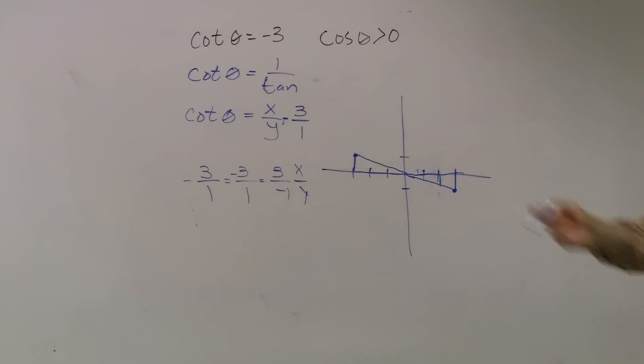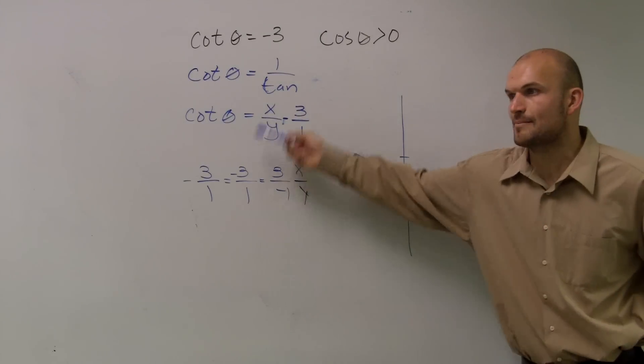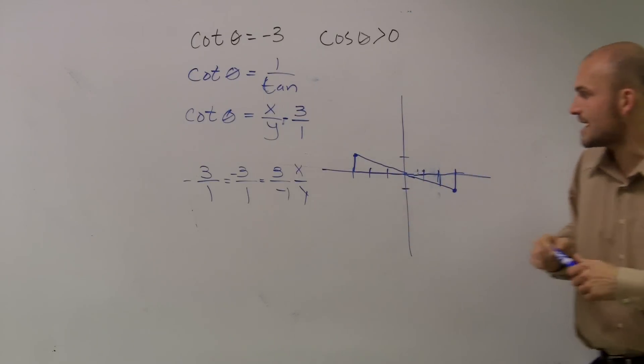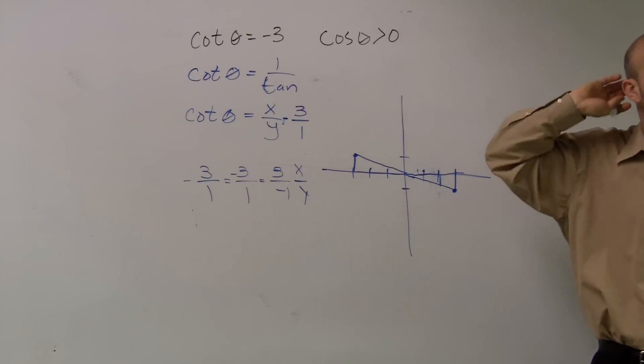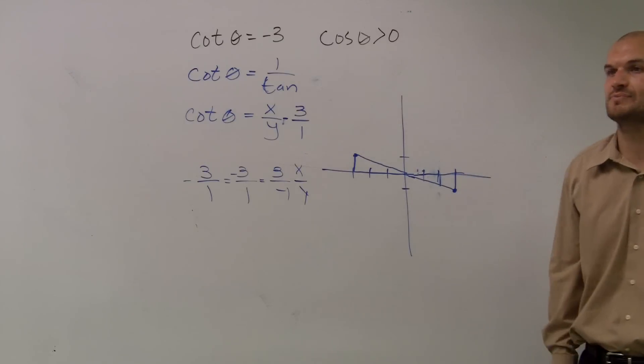Okay, so we have two possible triangles it could be, right? Does everybody see why? Because a negative could go up top and bottom when it's a negative. It doesn't matter. However, they do give us a constraint. They say cosine has to be greater than 0.